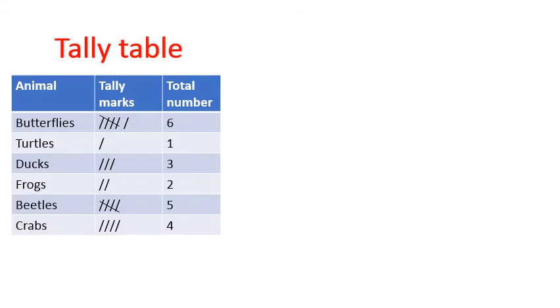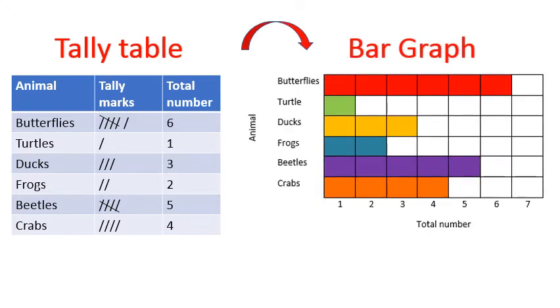After drawing a tally table, we can draw a bar graph to show that data clearly. Like this. As you can see, on one side you have the name of the animal, and on the other side you have the number of animals we saw.